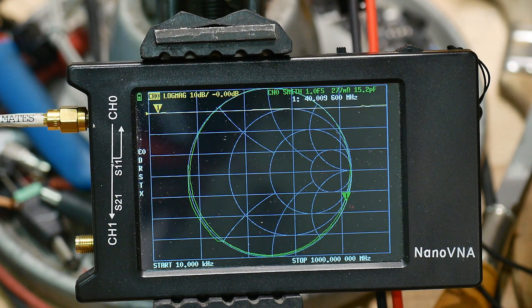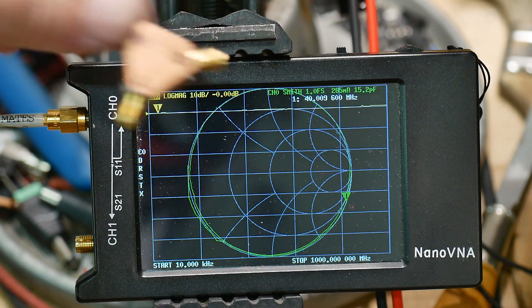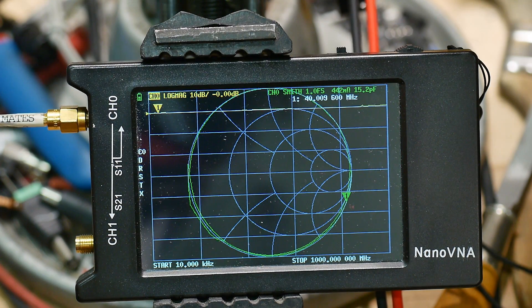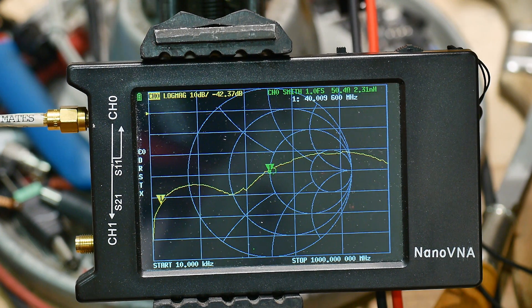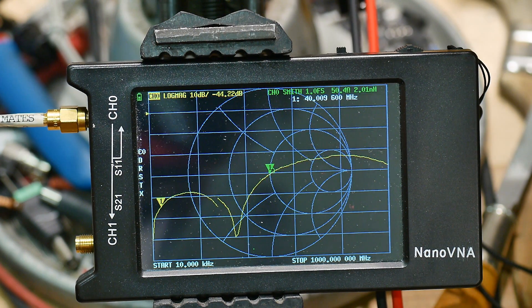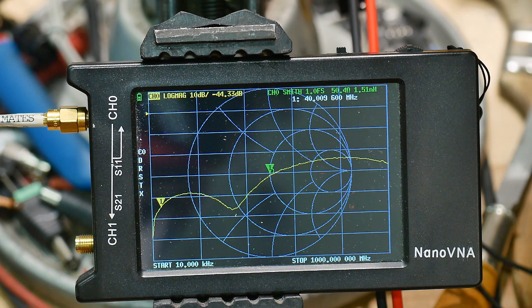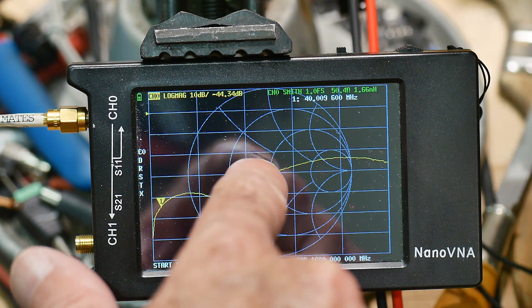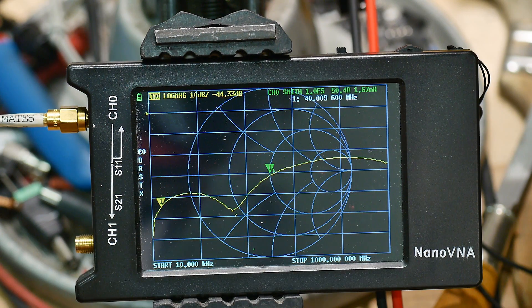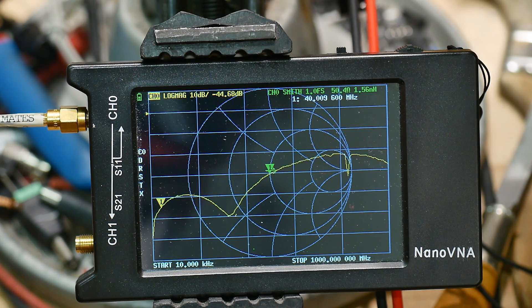The first thing we're going to do is I'm going to check my little female load, see how that measures. I'm sweeping between 10 kilohertz and 1 gigahertz. I'm showing two displays. I'm showing return loss, which is the yellow trace, and I'm showing the smith chart, so everything looks perfect on that.